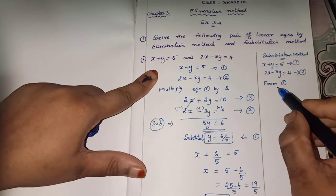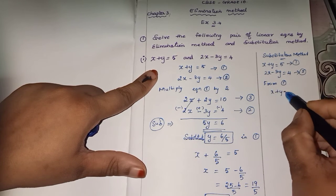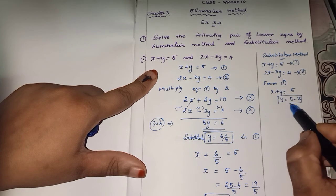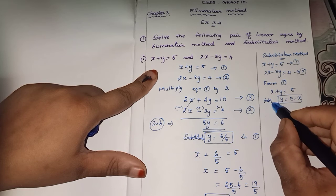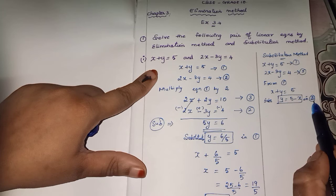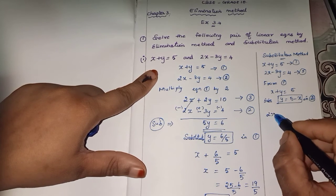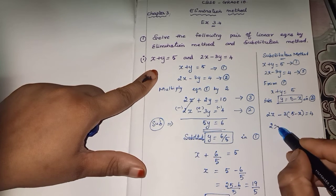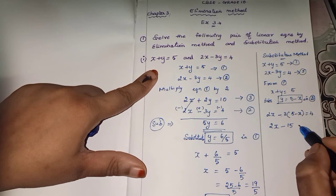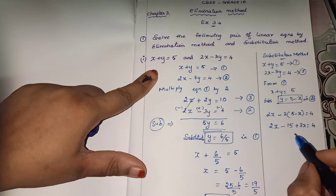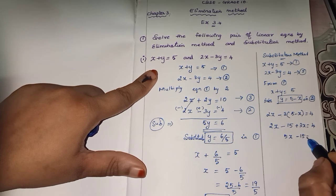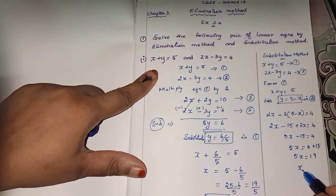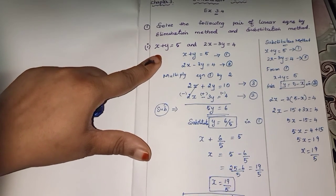x is equal to 5 minus y. I am going to substitute in the second equation: 2x minus 3 into y place, 5 minus x, is equal to 4. 2 into 5 is 10, 2 into minus x is minus 2x. So 10 minus 2x minus 3 into 5 is minus 15, plus 3x equals 4. Simplifying: 2x plus 3x is 5x, minus 15 equals 4. 5x equals 4 plus 15. 5x equals 19, x is equal to 19 by 5. Same answer, x is equal to 19 by 5.